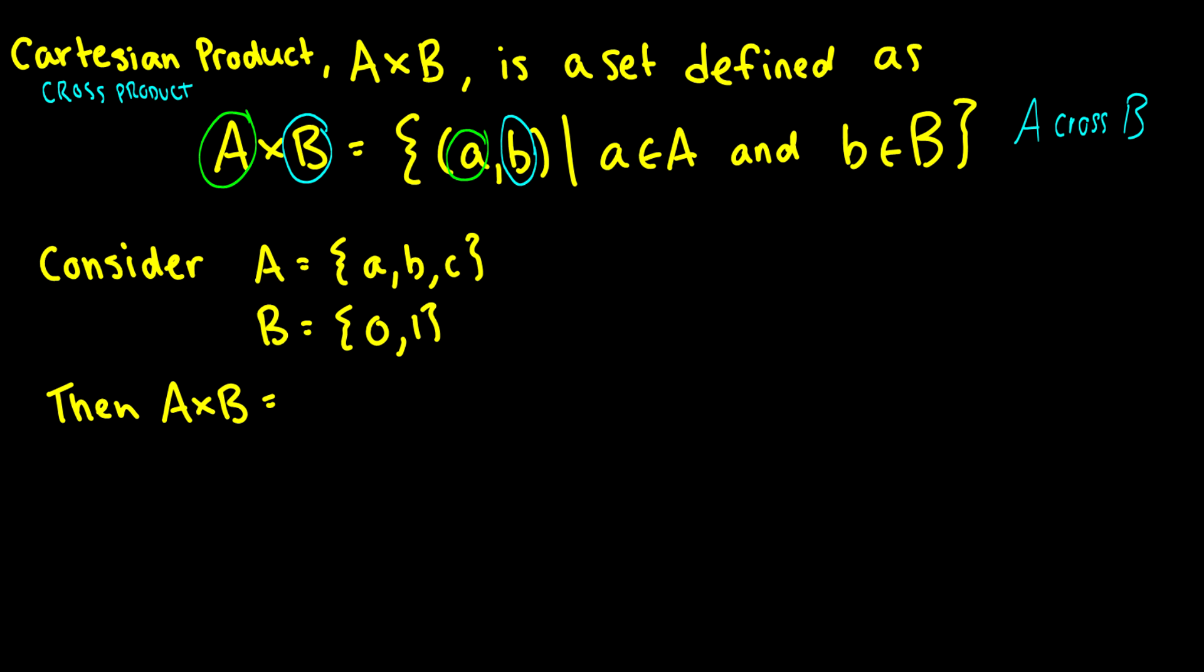It's a little bit abstract sometimes when you're starting out set theory to read a definition of a set and understand what it means. So we have an example here. We have the set A which contains three letters a, b, c, and the set B which contains the numbers 0, 1.